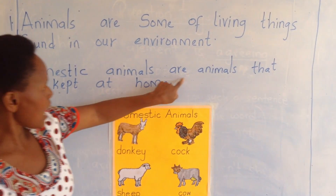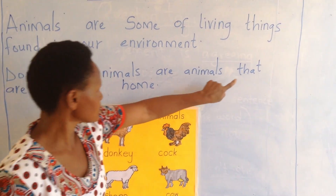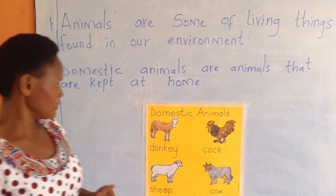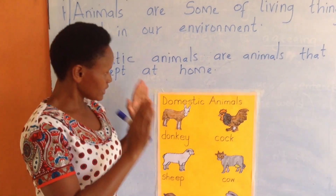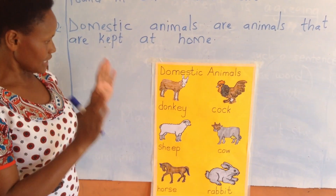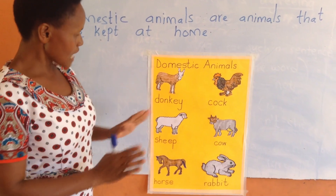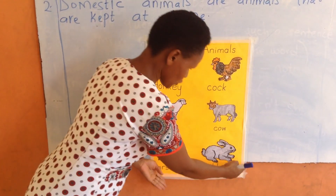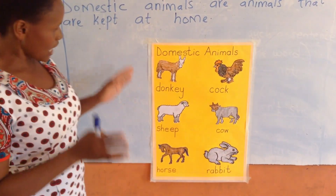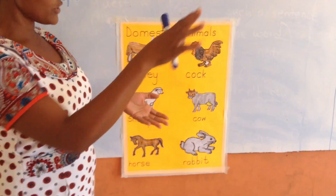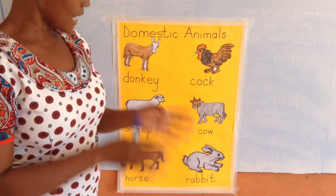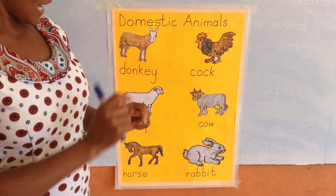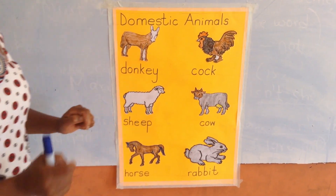Domestic animals are animals that are kept at home. We want to look at some of the domestic animals that are kept at home. I'll just give you some of the animals, then you'll go outside your home and get more domestic animals, try to draw them and write their names and also color them.